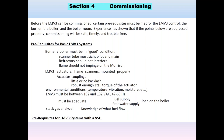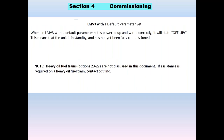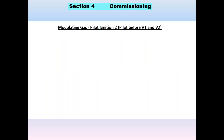There are additional prerequisites for the LMV3 VSD or PWM detailed in the commissioning sections. When an LMV3 is powered up and wired correctly, it will display 'off unprogrammed,' meaning the unit is in standby and has not yet been fully commissioned. There are various stages of commissioning, and until completely commissioned, you will always see 'off unprogrammed.' This manual does not deal with heavy oil fuel trains — options 23 to 27 — which are rarely used in the United States. Contact SCC for assistance with heavy oil trains.